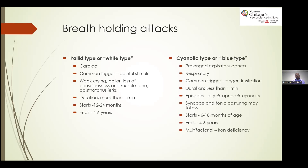The most common type is the cyanotic or blue type, associated with prolonged respiratory apnea through a respiratory mechanism. Common triggers are anger and frustration. Episodes usually last less than a minute: the baby cries, develops prolonged respiratory apnea, which leads to cyanosis. They can also have syncope or tonic posture at the end. Onset is typically six to eighteen months of age, resolving by four to six years. Multifactorial etiology has been shown, and iron deficiency has been reported in most cases.